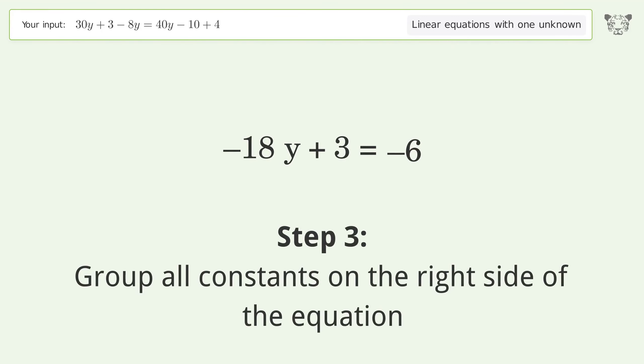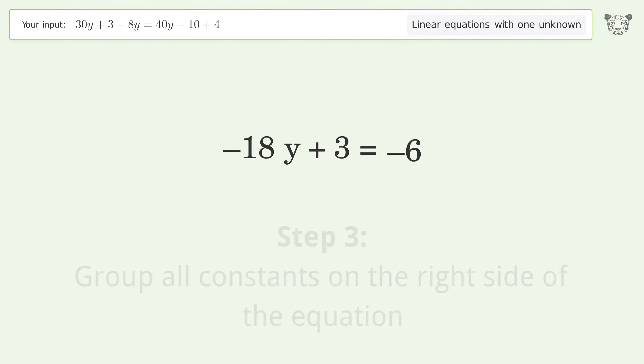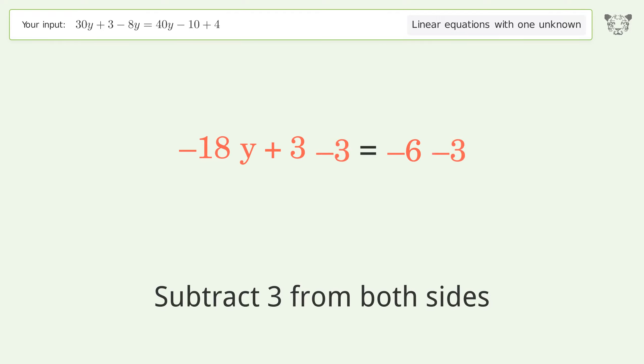Group all constants on the right side of the equation. Subtract 3 from both sides. Simplify the arithmetic.